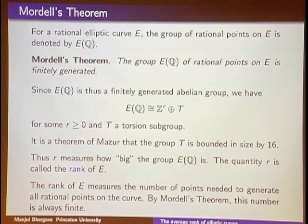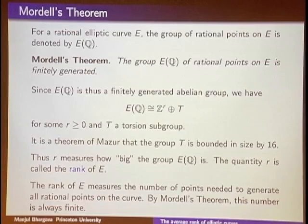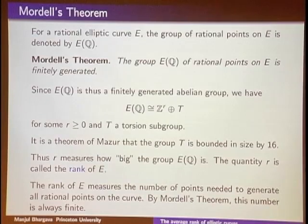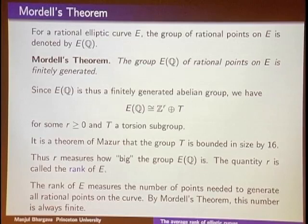There are many open questions about the rank of elliptic curves. What values of r are possible? That's unsolved. Can r be unbounded? That's unsolved. The largest rank ever found is 28, due to Noam Elkies. We don't even know whether r can be arbitrarily large. Even something much easier is not known: is the rank on average bounded, or does it go to infinity as you take larger and larger elliptic curves?